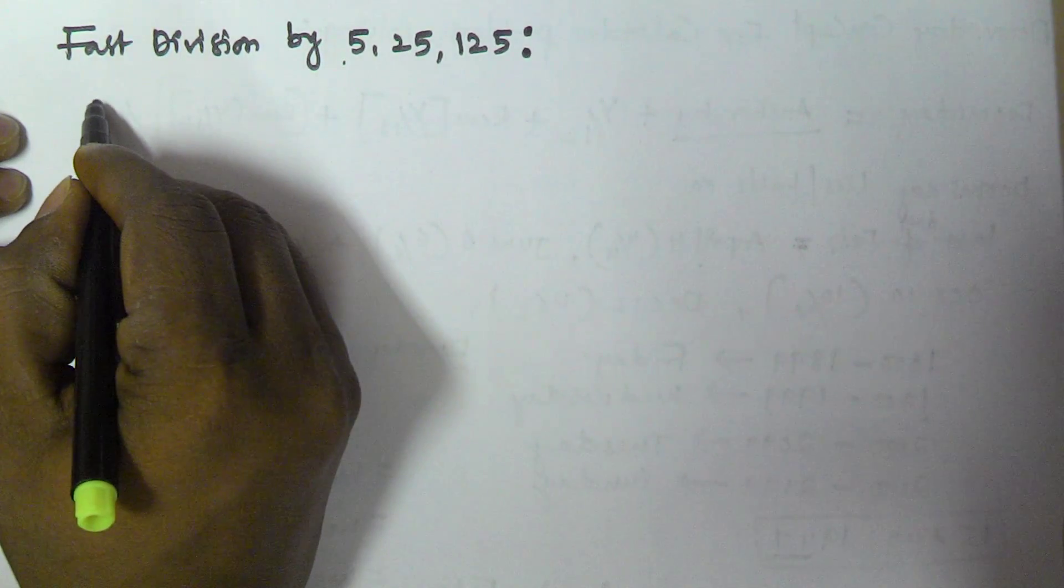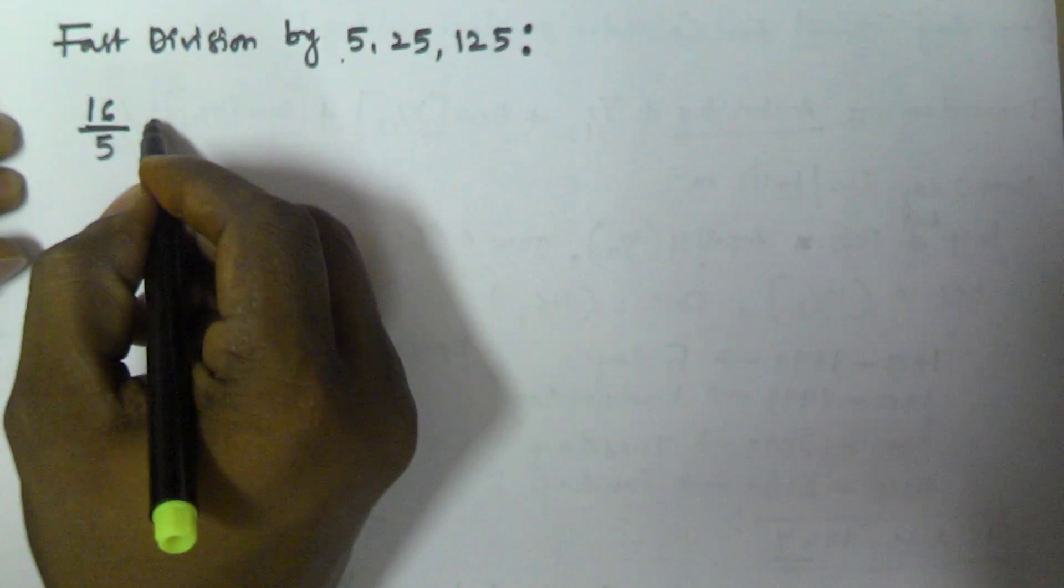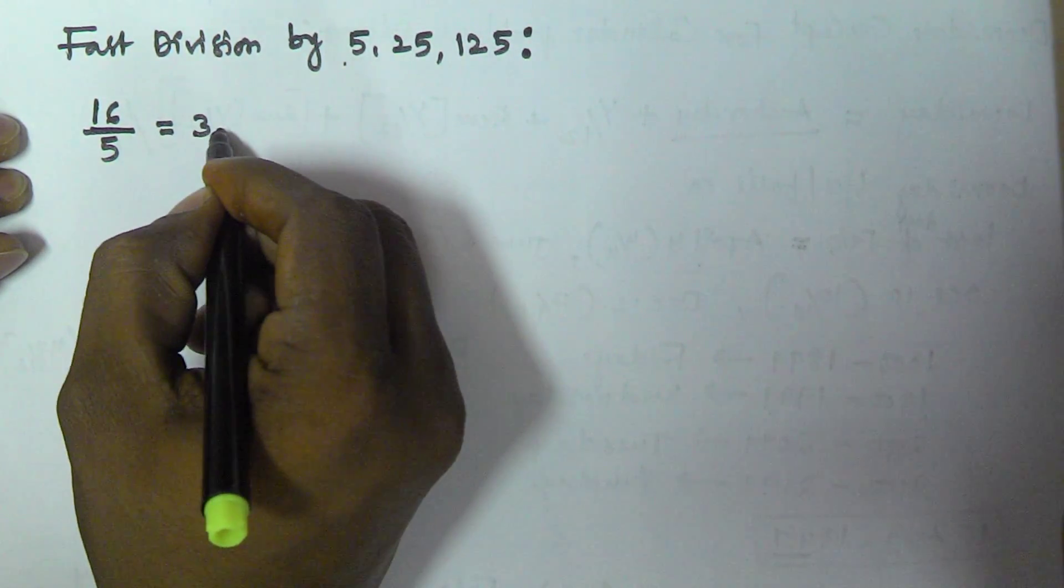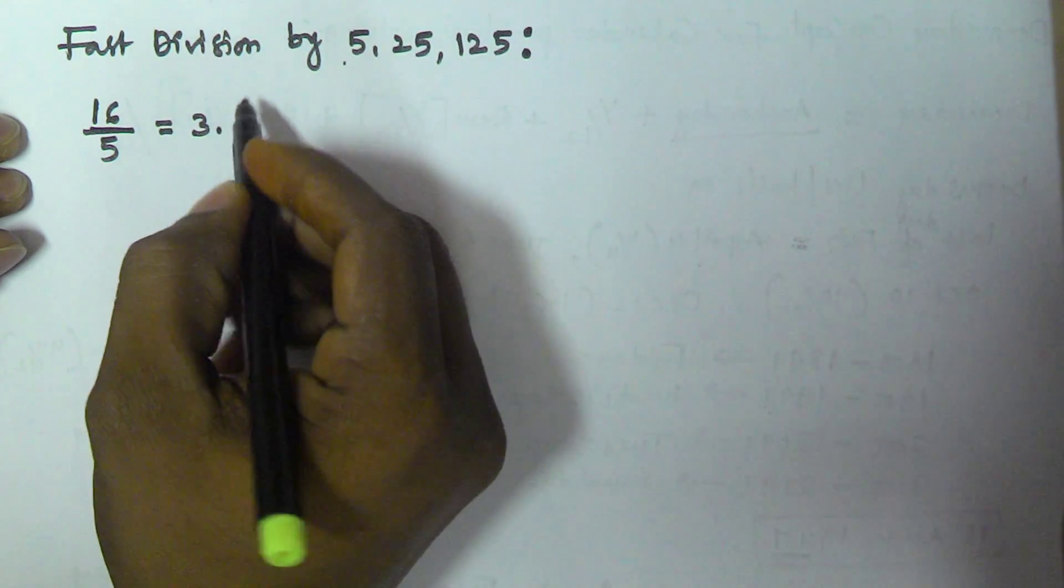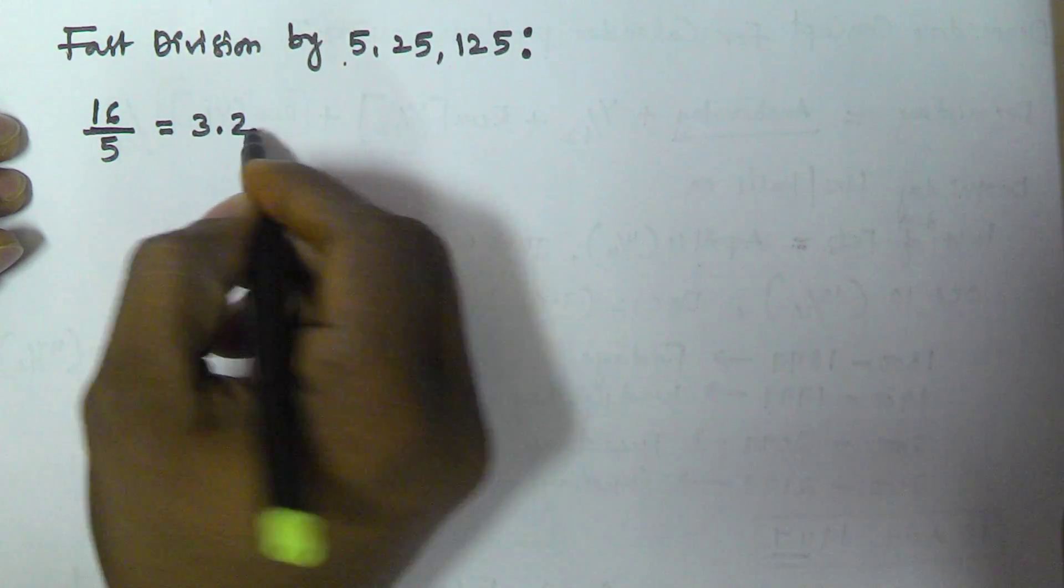Now let's consider, I want to divide 16 by 5. Normally what we do: 5 goes into 16 three times, that's 15, and then we have remainder 1. We divide that 1 by 5, so 1 by 5 is 0.2, giving us 3.2.